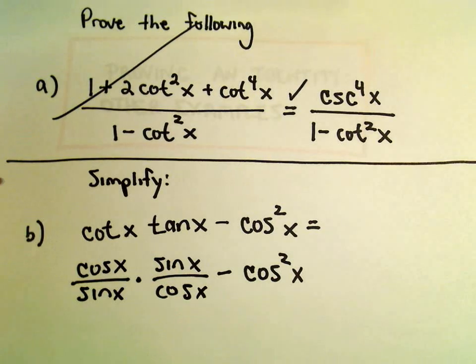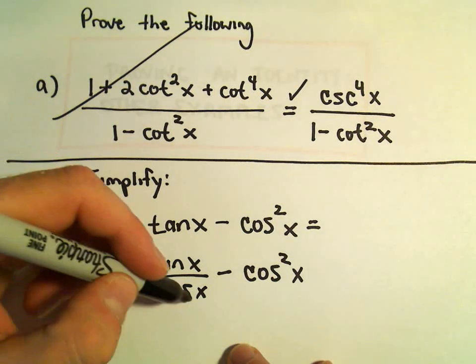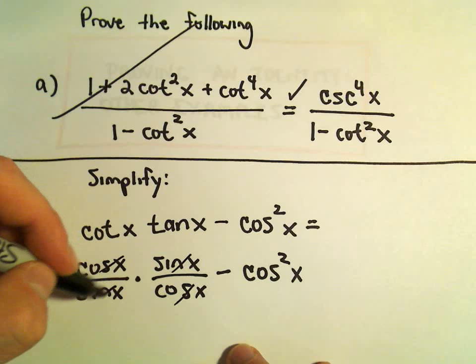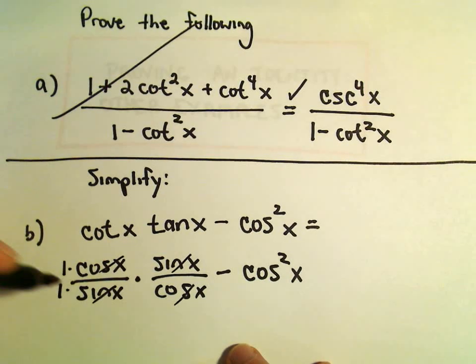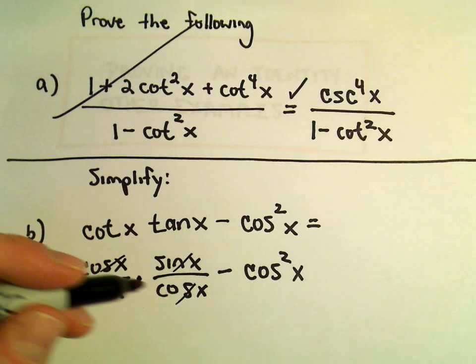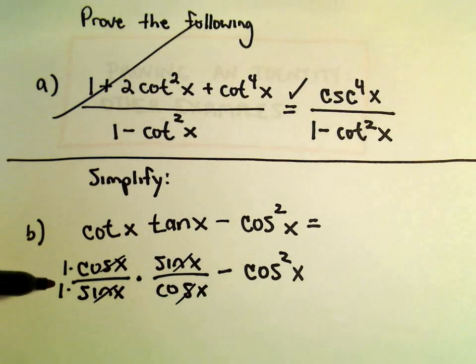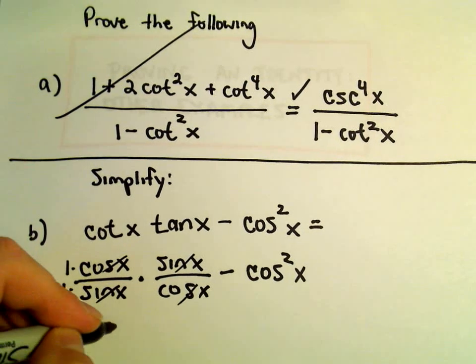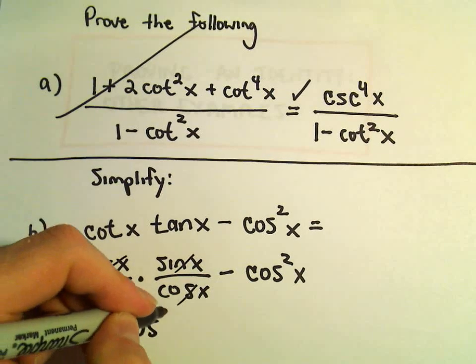Well, we can simply just start canceling out factors. We've got a cosine over a cosine, we've got sine over sine. You can think about there being ones on the top and bottom. That wouldn't change their value. So we're really left with 1 over 1, or 1 minus cosine squared x.